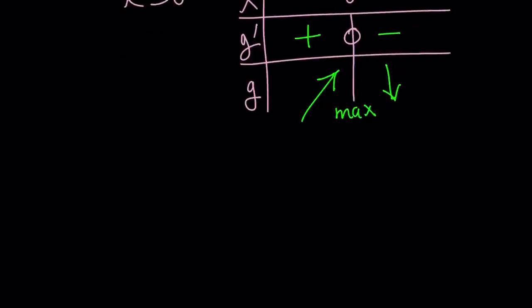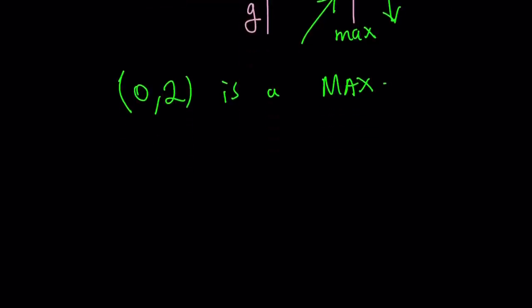So, we have a max at 0, 2. Now, let's go ahead and put it together. Let me show you the graph of this. So, our graph is going to increase and then decrease. So, here's the graph.